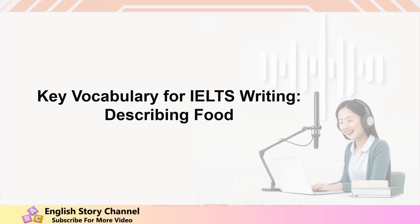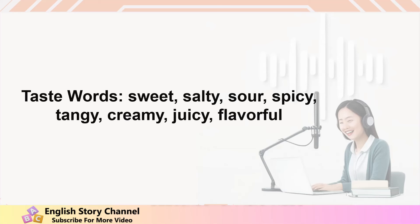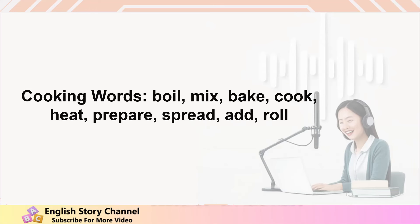Key vocabulary for IELTS writing — Describing food. Appearance words: golden, crispy, soft, melted, colorful, appetizing, round, brown. Taste words: sweet, salty, sour, spicy, tangy, creamy, juicy, flavorful. Cooking words: boil, mix, bake, cook, heat, prepare, spread, add, roll.